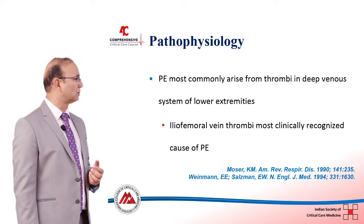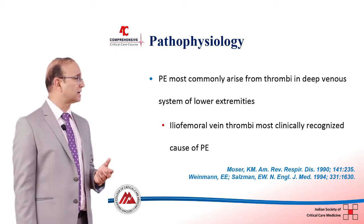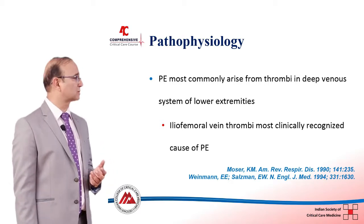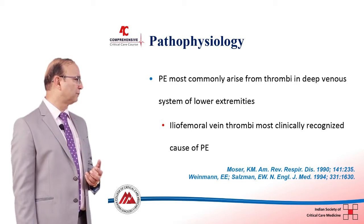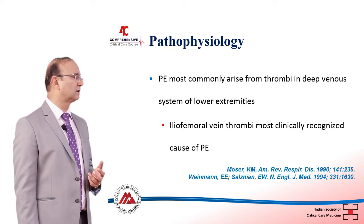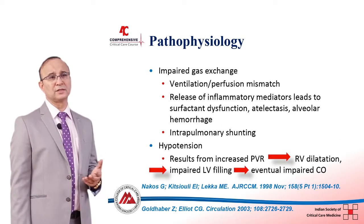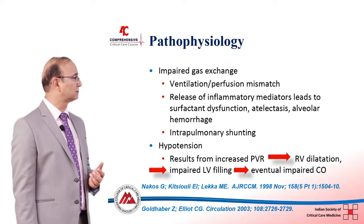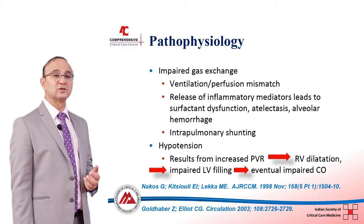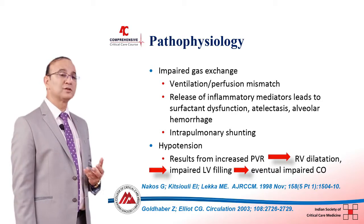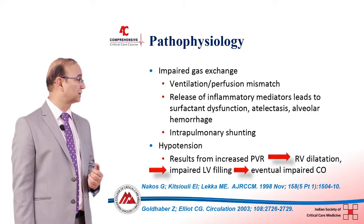Regarding pathophysiology, pulmonary embolism most commonly arises from thrombi in the deep venous system of the lower extremities, with iliofemoral vein thrombi being the most clinically recognized cause. Significant pulmonary embolism can result in ventilation-perfusion mismatch, release of inflammatory mediators leading to surfactant dysfunction, atelectasis, alveolar hemorrhage, and intrapulmonary shunting.